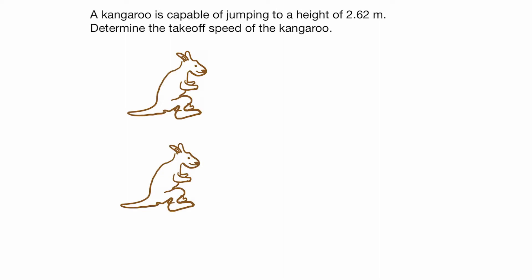And the second step is you want to define your coordinate system. What I mean by that, you want to set up your origin where it's going to be your zero point and usually the most convenient is to set it at the ground level. So from your ground level, then the kangaroo reached a maximum height of 2.62 meters.